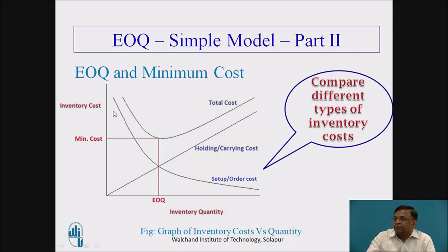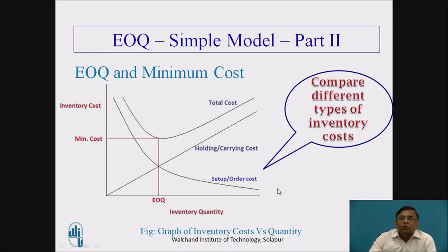This particular slide was discussed in an earlier video, part 1. This graph indicates inventory cost on the vertical axis and inventory quantity on the horizontal axis. The straight line represents holding cost or inventory carrying cost, whereas the curved line indicates setup cost or ordering cost. The summation of these two is represented by the U-shaped line, that is total cost.